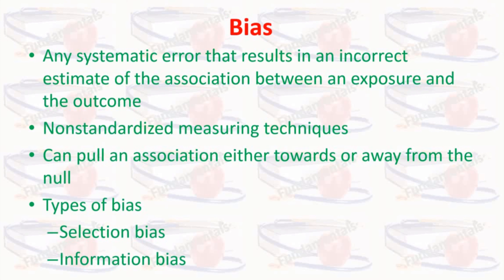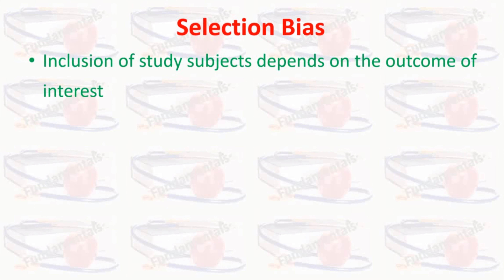When we look at the types of bias, there are more than 50 types identified in epidemiological studies. But for simplicity, they are broadly grouped into two categories: selection bias and information bias. Let's discuss them one by one.